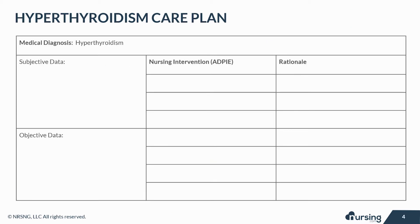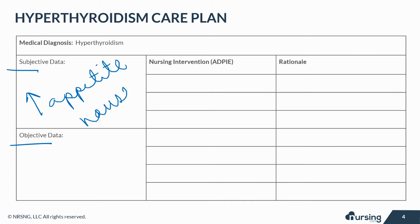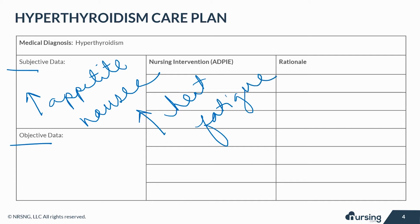Let's take a look at some of the subjective and objective data that your patient with hyperthyroidism may present with. Remember, subjective data are going to be things that are based on your patient's opinions or feelings, like increased appetite, nervousness, nausea, changes in menstrual patterns, increased sensitivity to heat, fatigue, and difficulty sleeping.